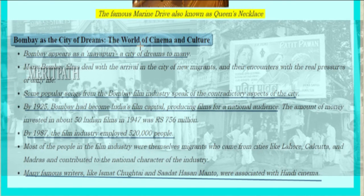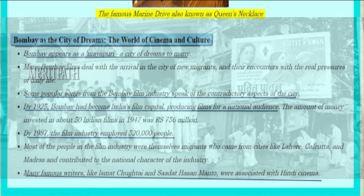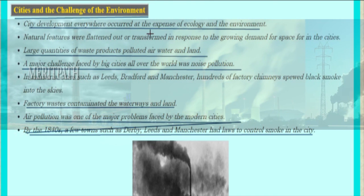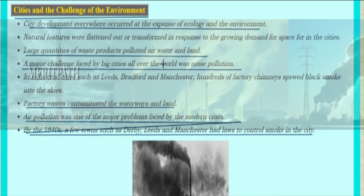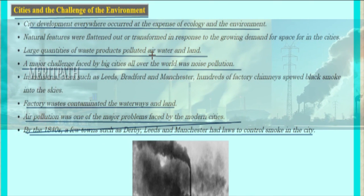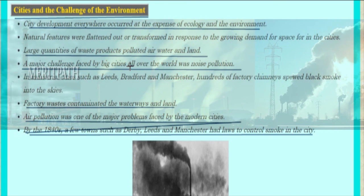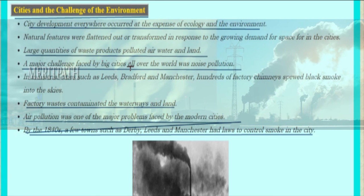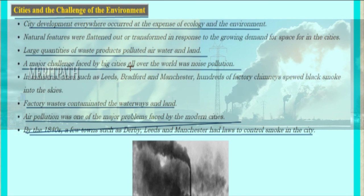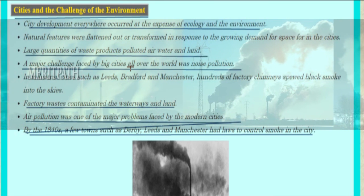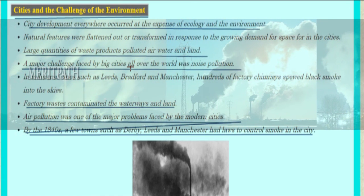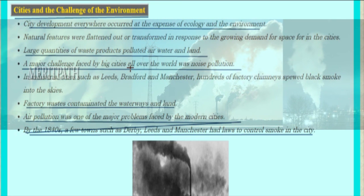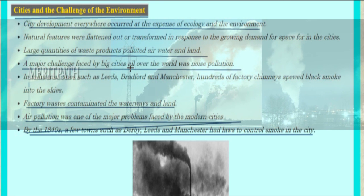Famous writers like Ismat Chughtai and Saadat Hasan Manto wrote about cities and the challenges of the urban environment. City development everywhere occurred at the expense of ecology and the environment. Natural features were flattened out or transformed in response to the growing demand for space. Large quantities of waste products polluted the air, water, and land. A major challenge faced by big cities all over the world was noise pollution. Industrial cities such as Leeds, Bradford, and Manchester had hundreds of factory chimneys spewing black smoke into the skies, and factory wastes contaminated water and land. Air pollution was one of the major problems faced by modern cities.